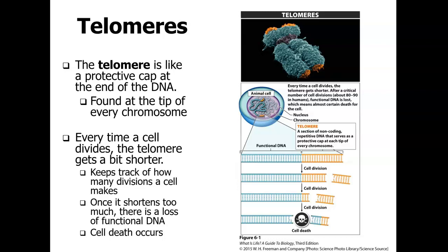We talked briefly about chromosomes in unit 5, and now we're going to look at them a little bit closer. At the ends of each chromosome, you're going to have little caps — a protective covering found on every single tip of every chromosome. Every time a cell divides, the telomere gets a little bit shorter and shorter. They keep track of how many times that cell has divided. Once it's worn down too much, that cell knows it is time to go through apoptosis, which is that regulated cellular death.